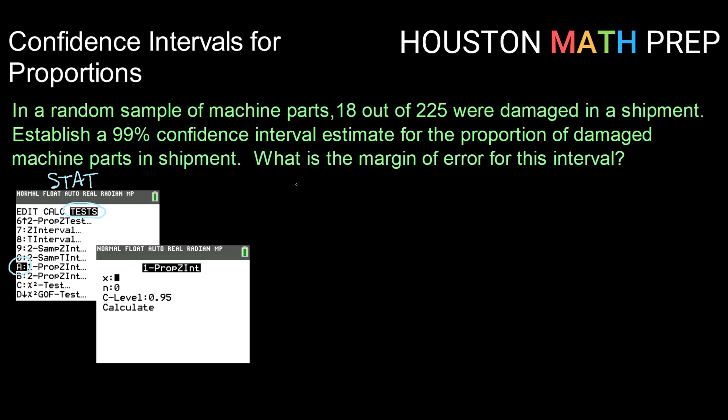In this particular instance, our X, or our number of damaged goods would be 18. Our number in our sample, or N, is going to be 225. And our confidence level as a decimal, 99%, would be 0.99.